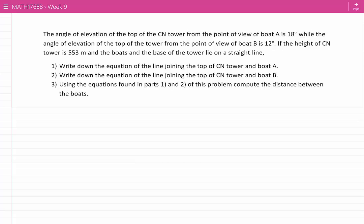If the height of the CN Tower is 553 meters and the boats and the base of the tower lie on a straight line: 1. Write down the equation of the line joining the top of the CN Tower and boat A. 2. Write down the equation of the line joining the top of the CN Tower and boat B. 3. Using the equations found in parts 1 and 2, compute the distance between the boats.